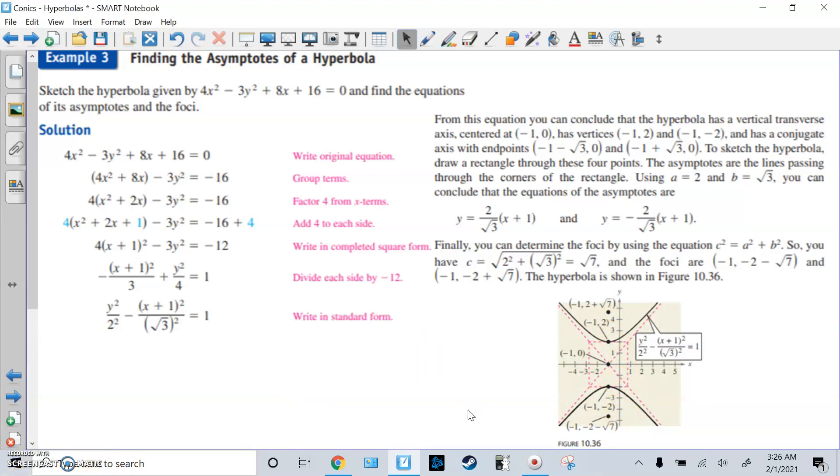Correction, I said that slightly wrong. So the foci is past the vertex. You have to do the vertex number, then minus root 7 for here, then the vertex number plus root 7 for here. That's how you get that. Remember, because here, the foci are actually outside the vertices, not inside.